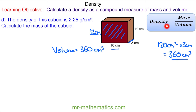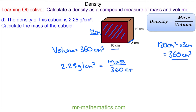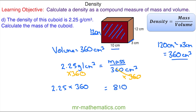We have density as 2.25 grams per centimeter cubed, equal to the mass divided by the volume of 360 centimeters cubed. Multiplying both sides by 360, these cancel, so the mass equals 2.25 multiplied by 360, which is 810 grams.